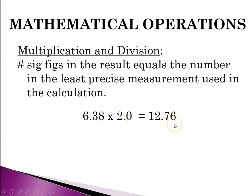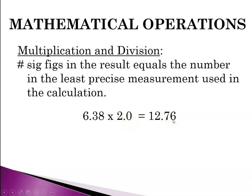My calculator gives me 12.76. But the first number has 3 sig figs, the second number has 2 sig figs, and the calculator gave me 4. Which has the fewest sig figs? That would be the second number. So I have to round my answer to 2 sig figs, which gives us 13.